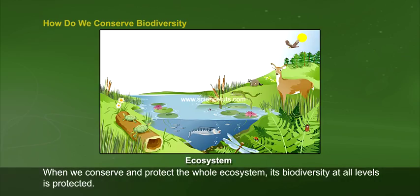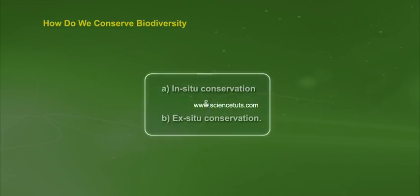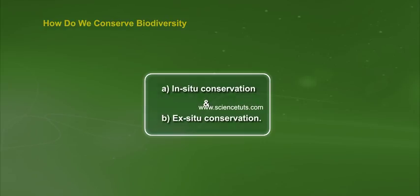How do we conserve biodiversity? When we conserve and protect the whole ecosystem, its biodiversity at all levels is protected. For example, when we save the forests, tigers are also saved. Biodiversity conservation occurs in two ways: A. In-situ conservation and B. Ex-situ conservation.